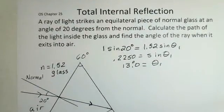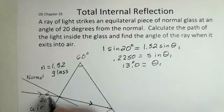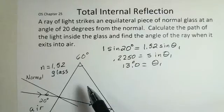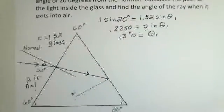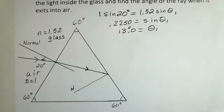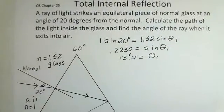Professor Clements here as we consider another problem in geometrical optics. We have a ray of light at an angle of 20 degrees away from the normal — I've pre-drawn that — striking an equilateral piece of glass with 60 degrees at each corner. Our task is to find the progress of the ray through this glass and how it exits into the air.